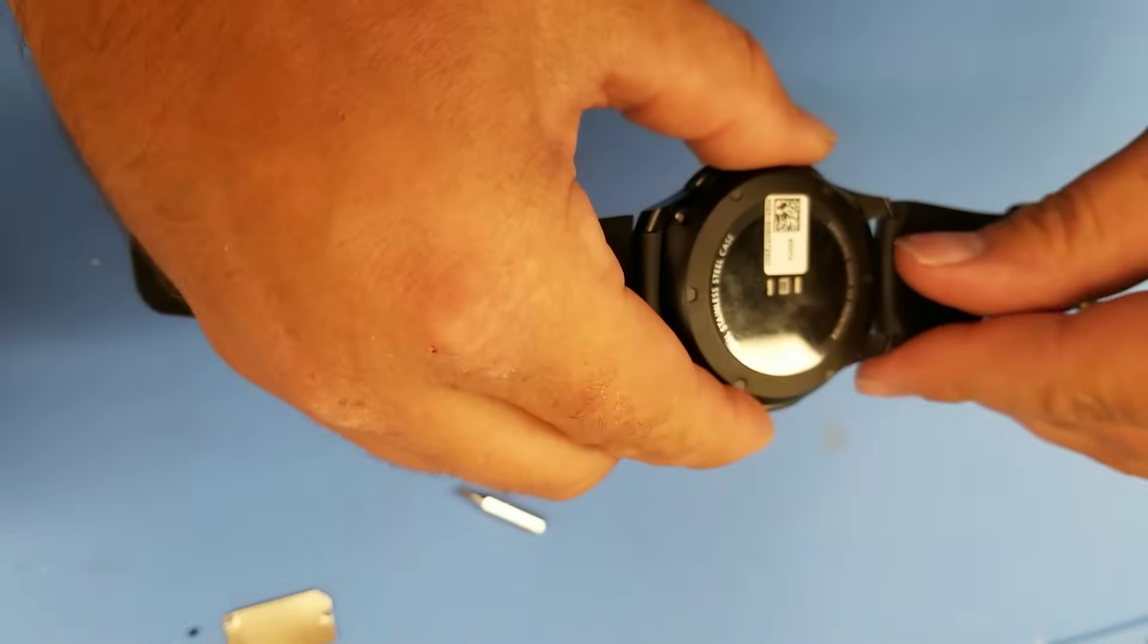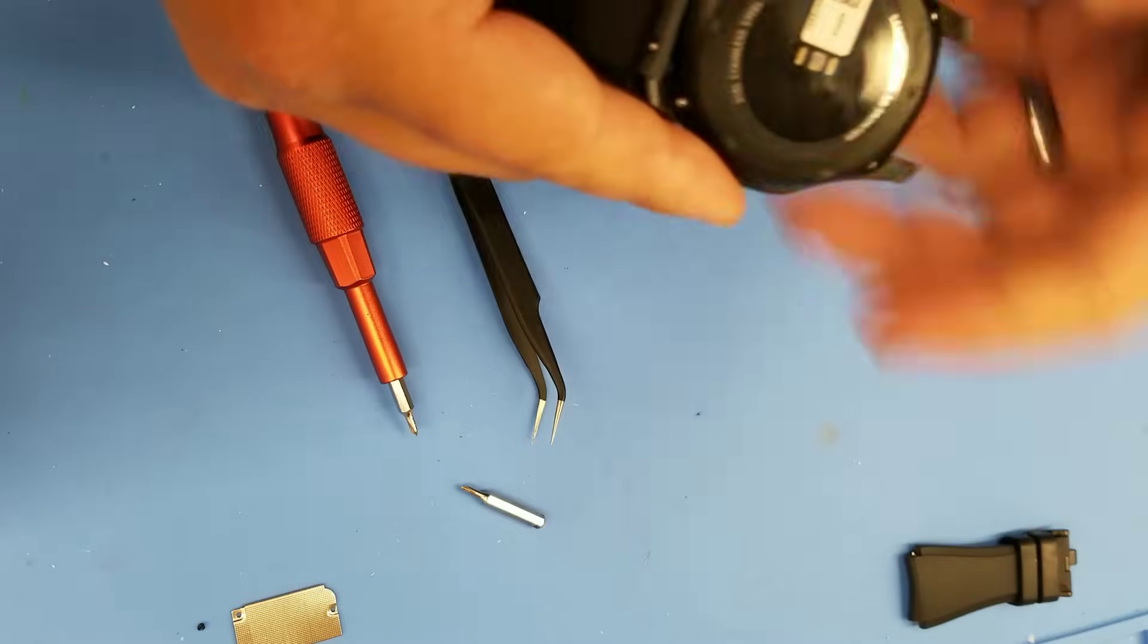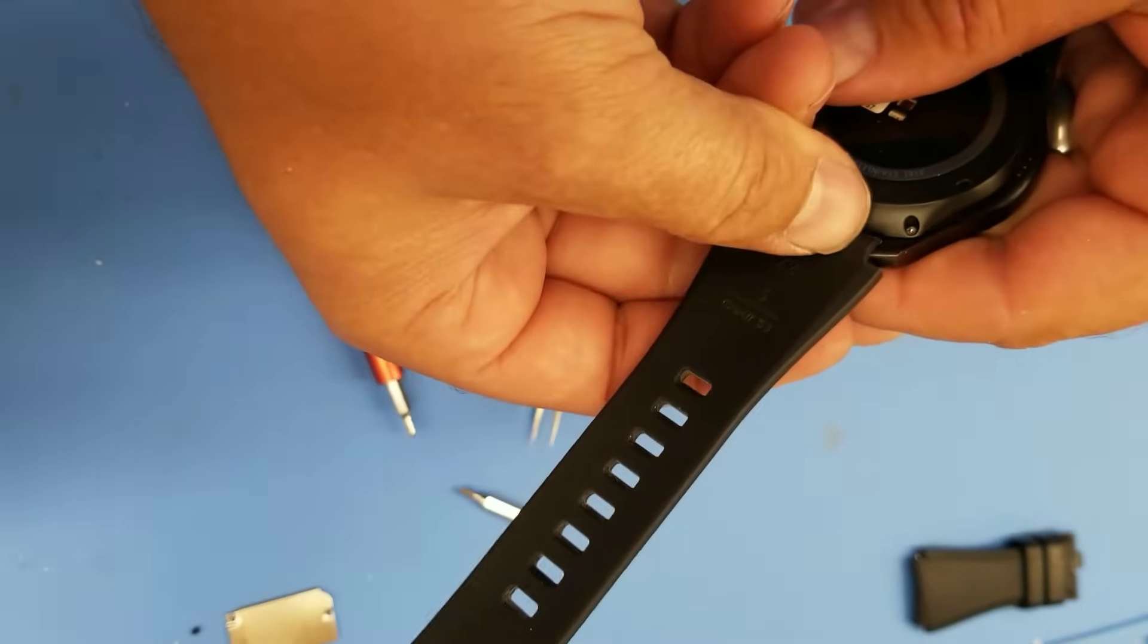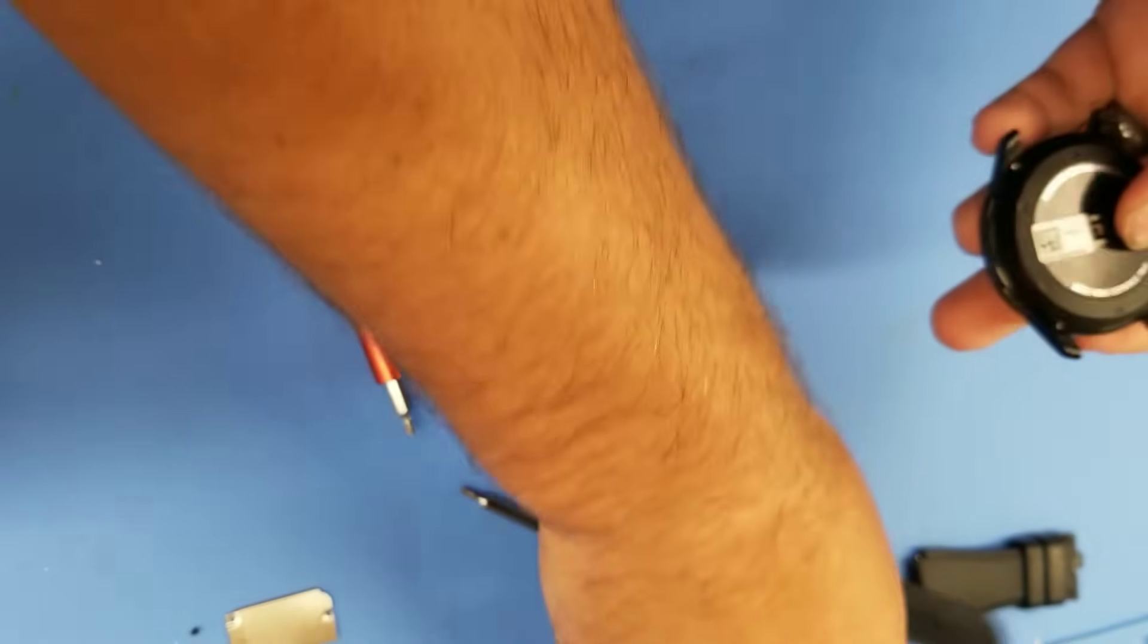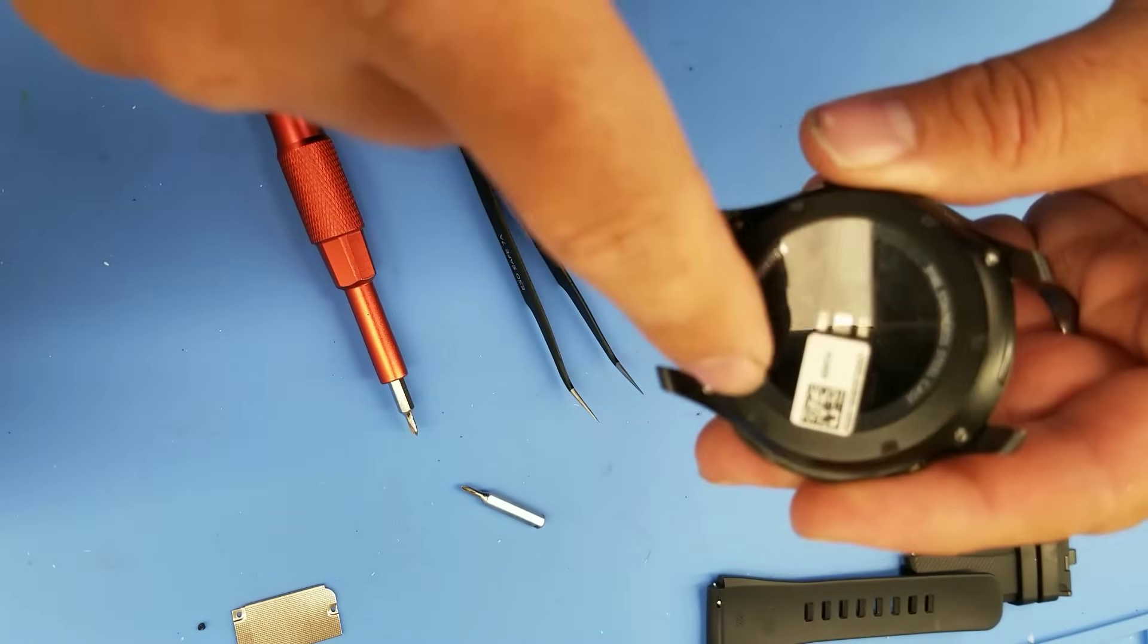So first thing I'm going to do is take the wristbands off. Then go ahead and remove the four screws.